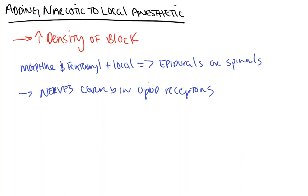As a result, not only do you get the effect of the local anesthetic blocking the sodium channel, which in turn prevents the transmission of the action potential down the nerve, but you also get the analgesic effect of stimulation of the opioid receptor within that nerve as well. So it's really that simple. Adding narcotics to our local anesthetics — fentanyl, morphine, whatever it is — increases the density of the block.